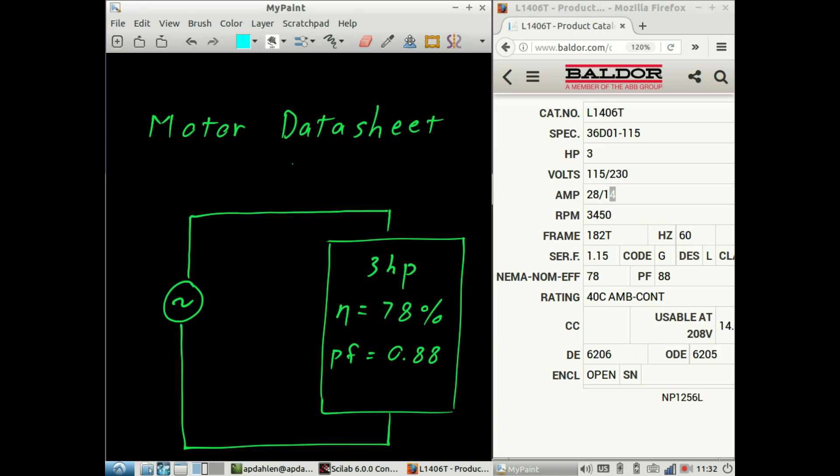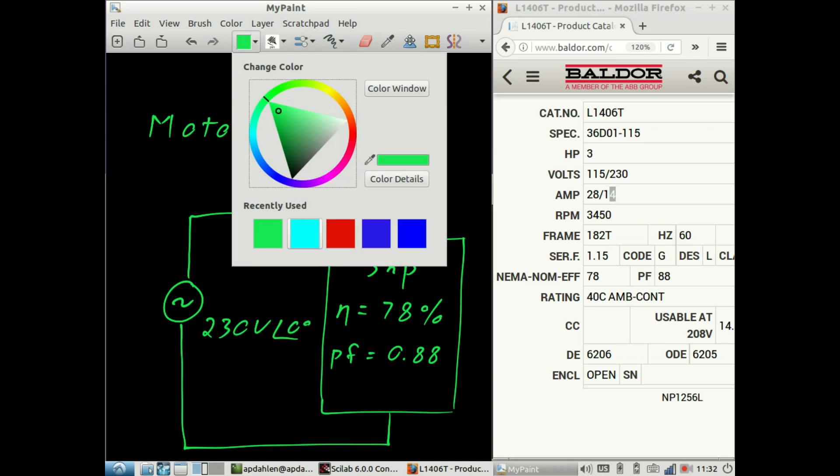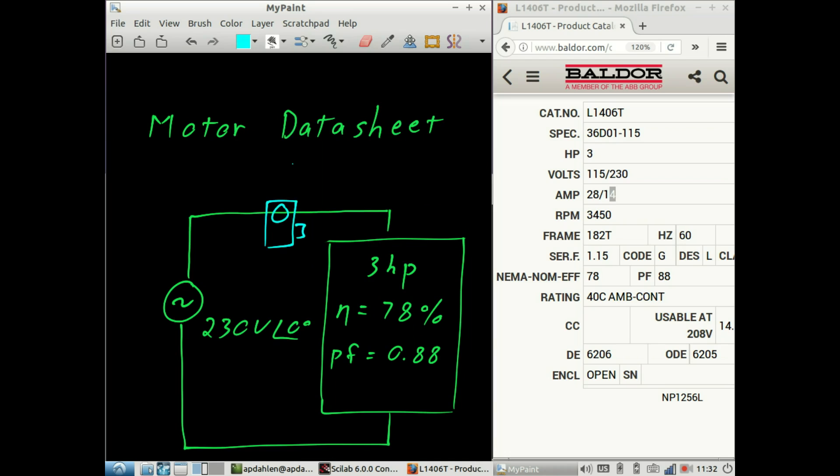And what I'd like to explore in this video is the current relationship. So if we were to place an amp clamp right there on this line, according to the datasheet, if the motor is running at 230 volts, we'll assume a phase angle of zero. We would expect the current to be 14 amps.